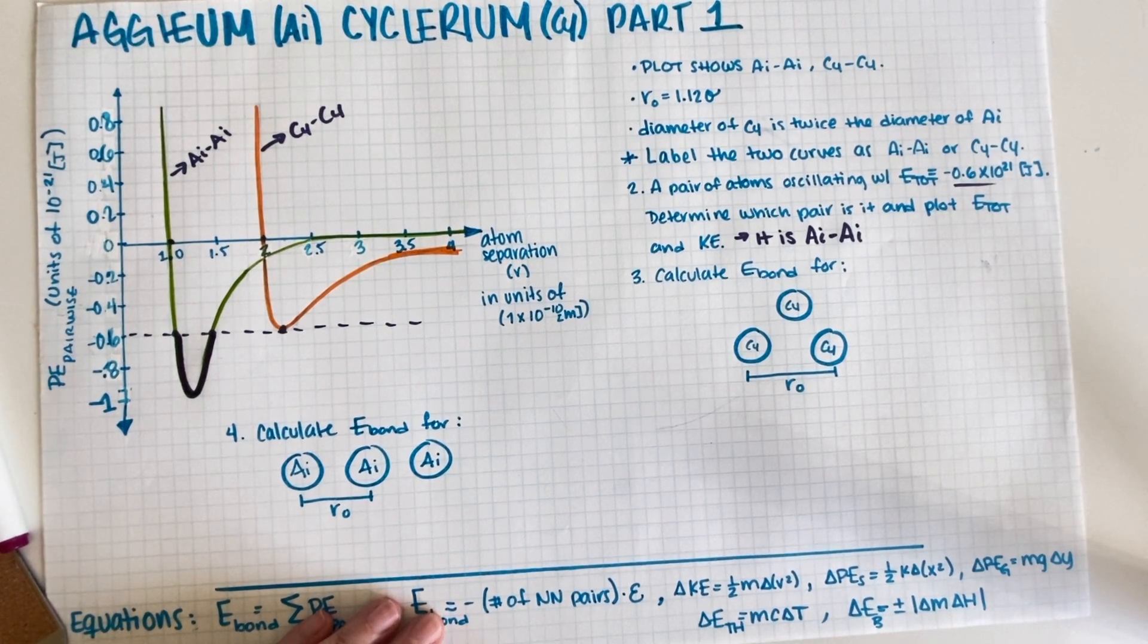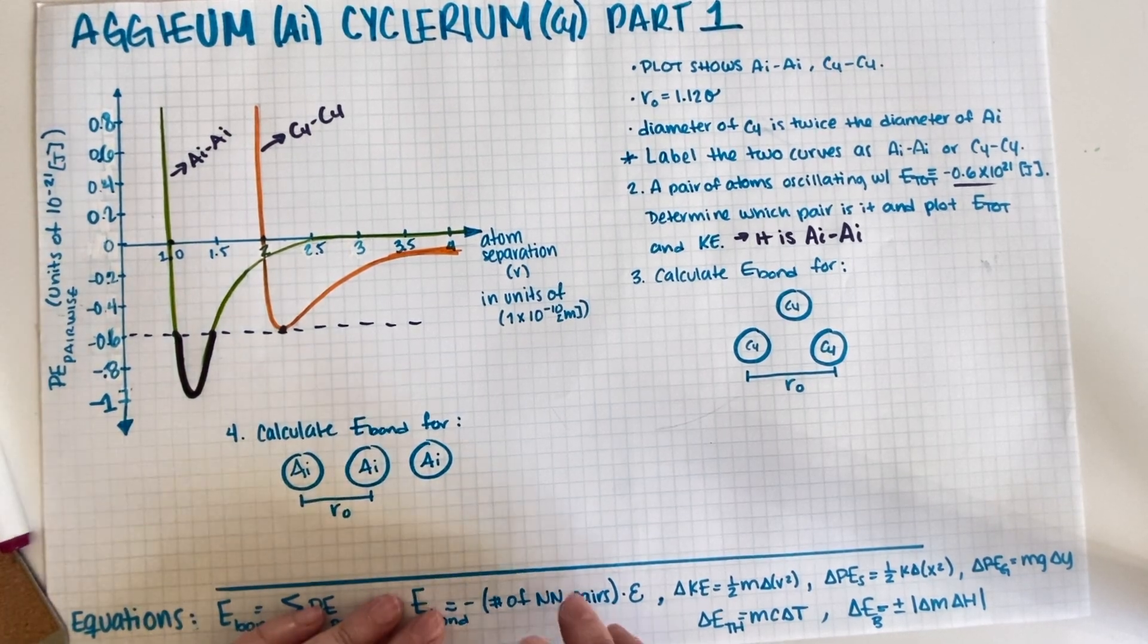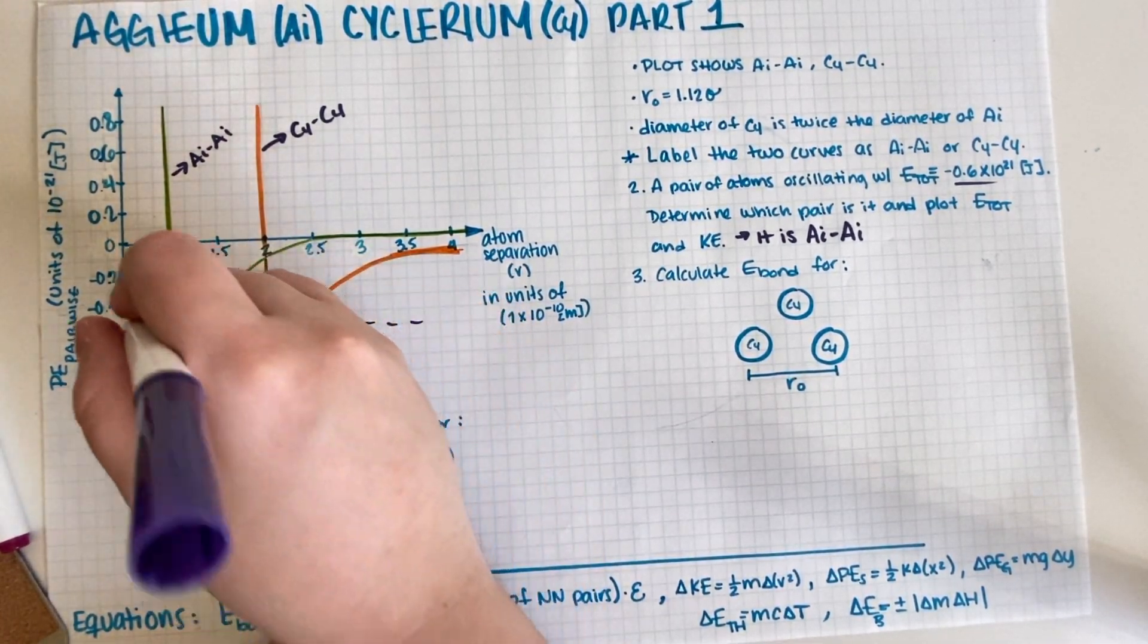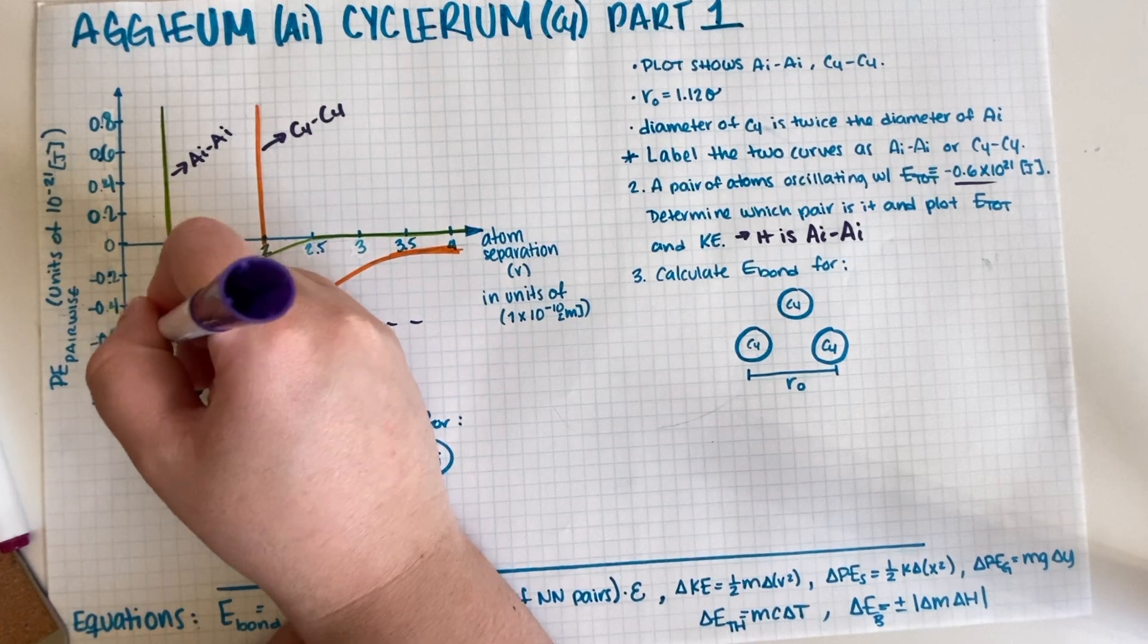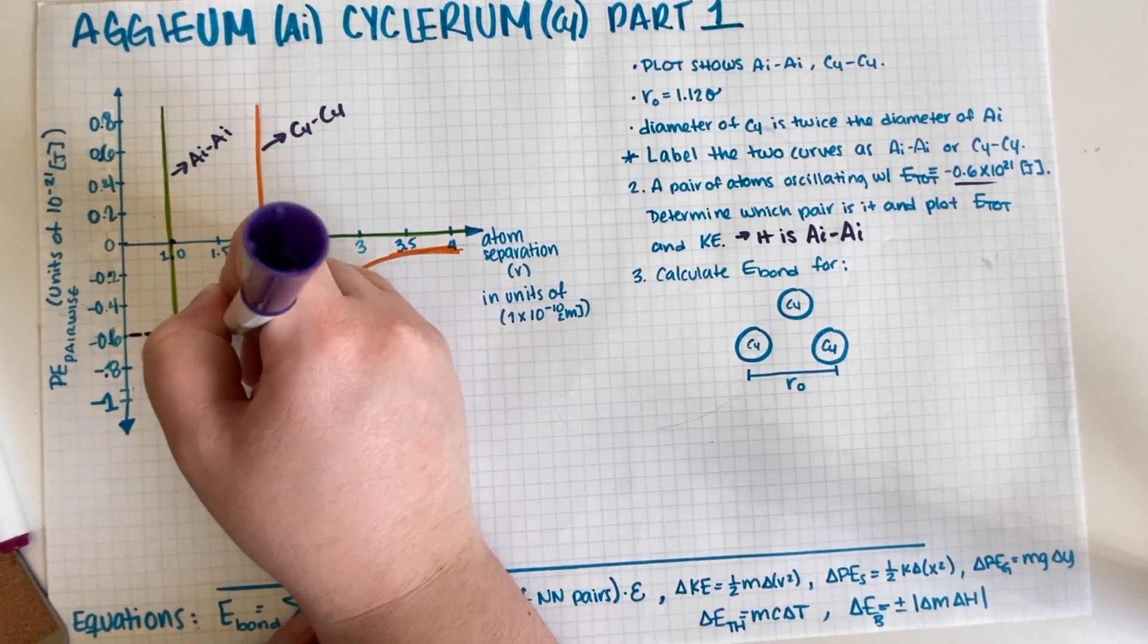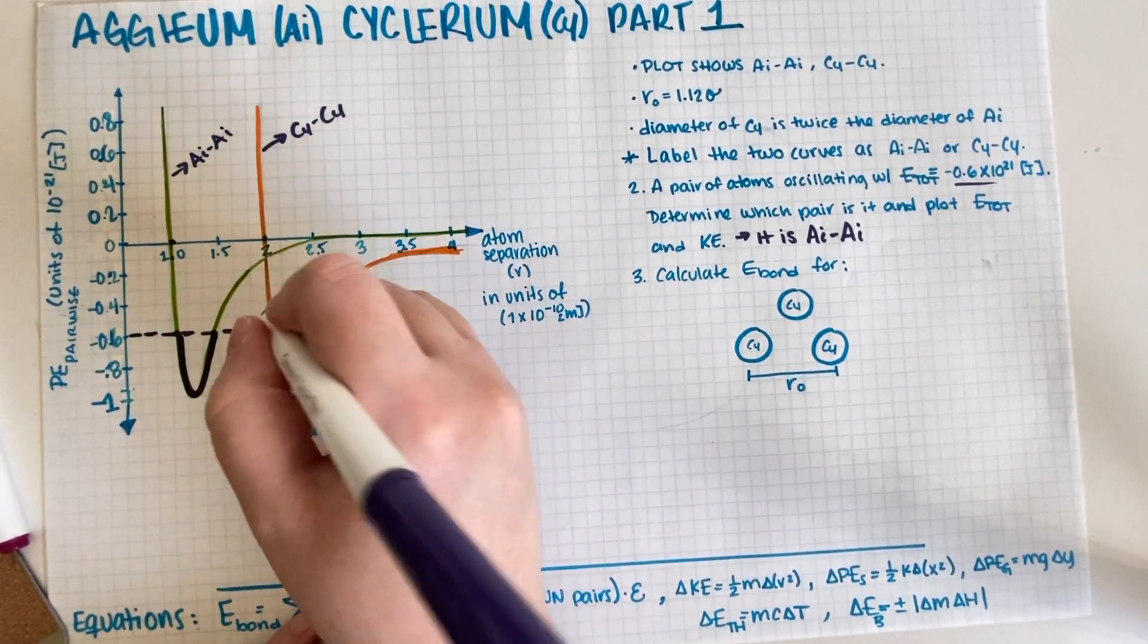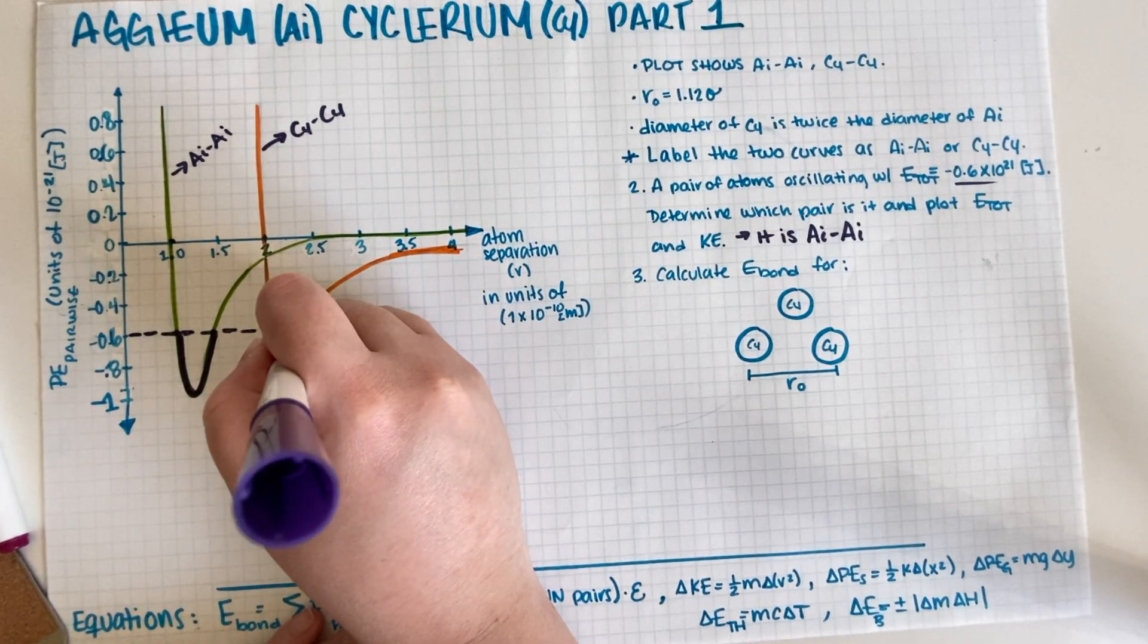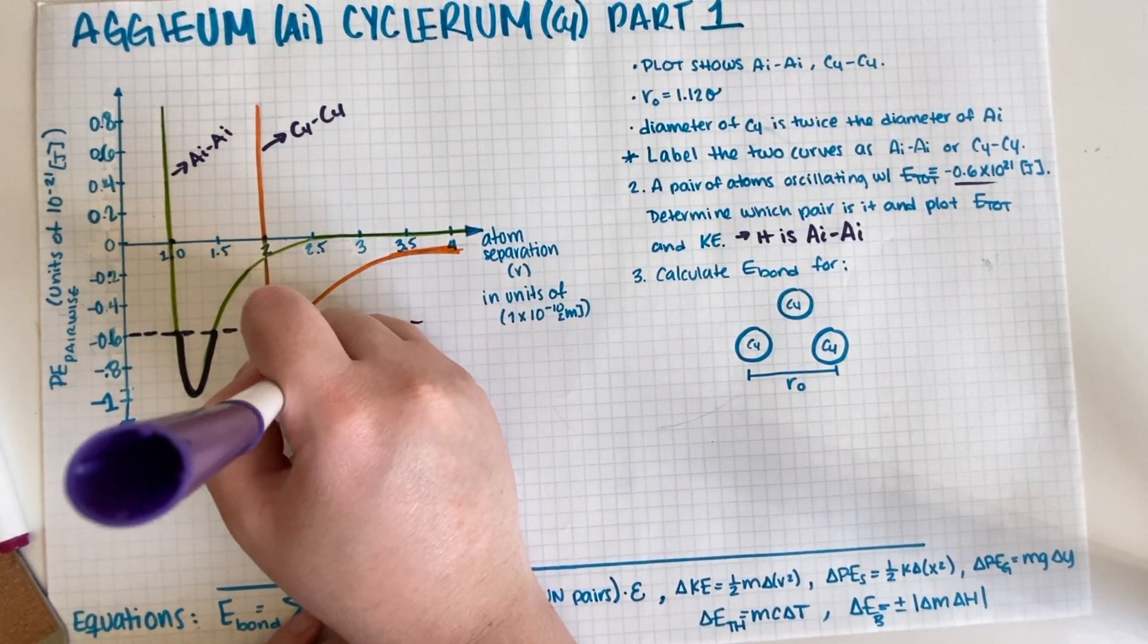Okay, so we also have to plot E_total and kinetic energy. So E_total I've already plotted - E_total is just this line over here. So this dashed line would be E_total.